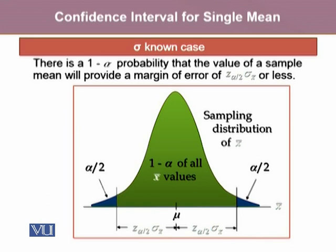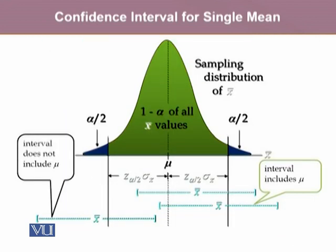The blue area represents the alpha by 2 region. If we have three various intervals, we may notice that x-bar here is outside this interval, so this interval does not include mu — it will not include mu. Whereas this other interval does include the mu value in it.